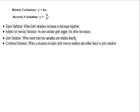I'm back with a final video on variation, and in this video we are going to talk about joint variation and combined variation. These should not take quite as much time because they are built on what we've already studied. We've looked at direct variation, where y is equal to k times x, where k is our constant of proportionality, and inverse variation, where y is equal to k over x, where k is again this constant of proportionality.